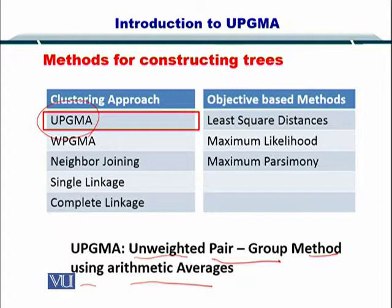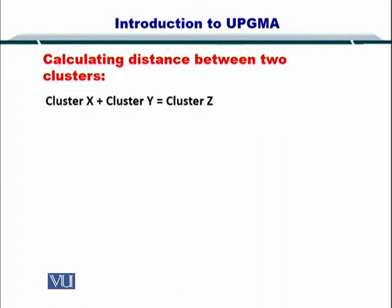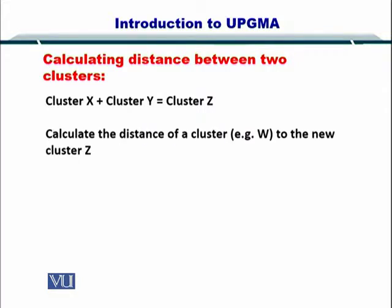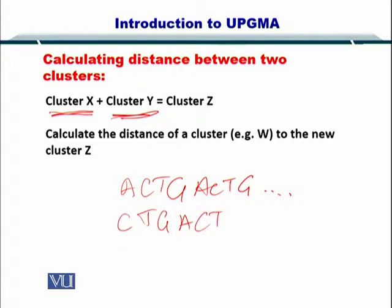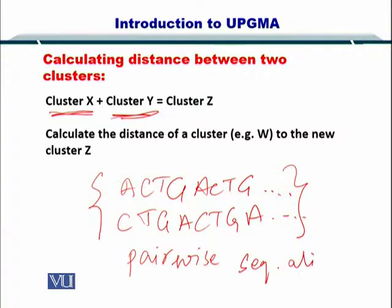Let's start looking at what this algorithm does for us. In order for us to compute the distance between two sequences, we need to see what is the distance between those sequences. The distance can be calculated simply by pairwise sequence alignment. For instance, if you have a sequence X: A, C, T, G, A, C, T, G, and so on, and another sequence Y: C, T, G, A, C, T, G, A, like that, then you would want to first perform a pairwise sequence alignment on these two sequences.